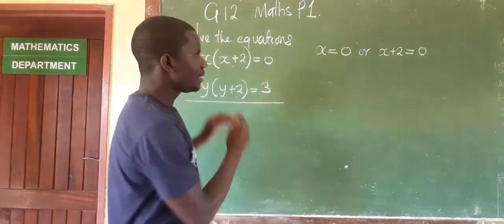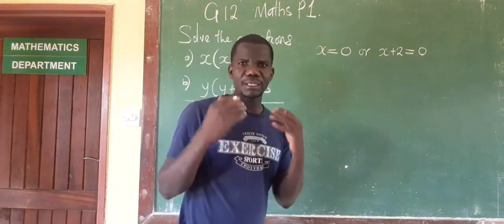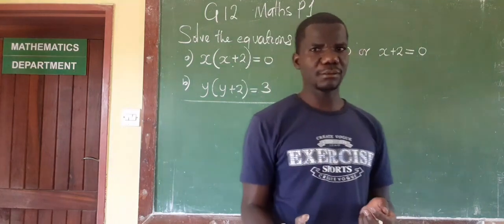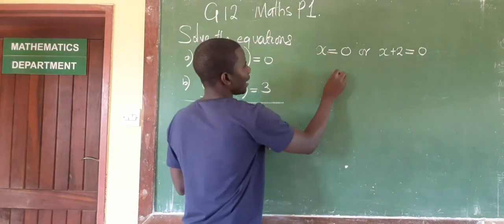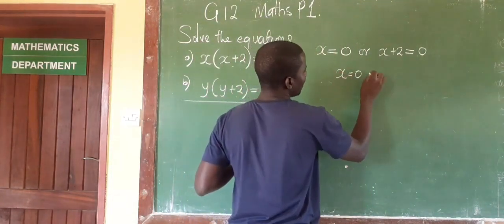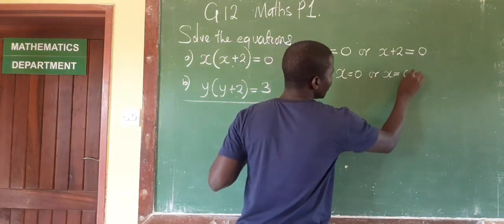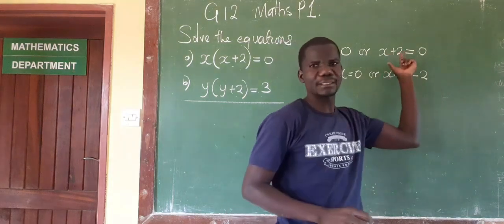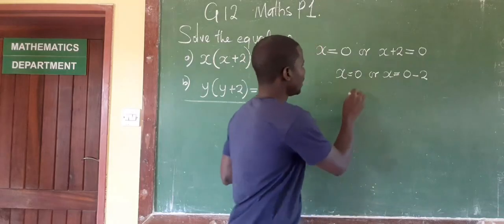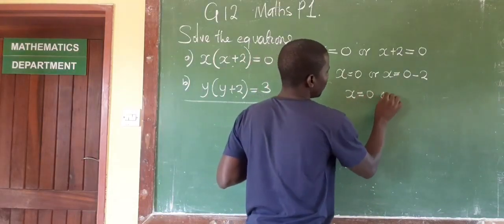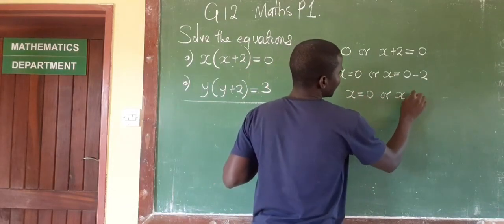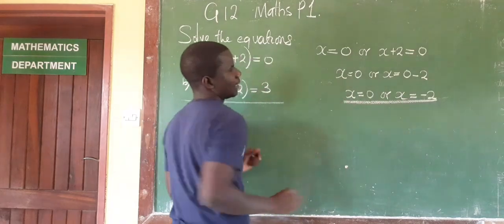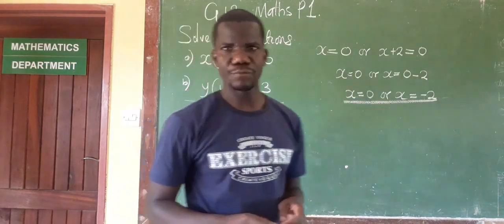These are quadratic equations, and a quadratic equation will always give you two values of x. So we have x equals zero, or x equals zero minus 2. The additive inverse of positive 2 is negative 2. Therefore x equals zero or x equals negative 2. These are the two values of x for the first question.